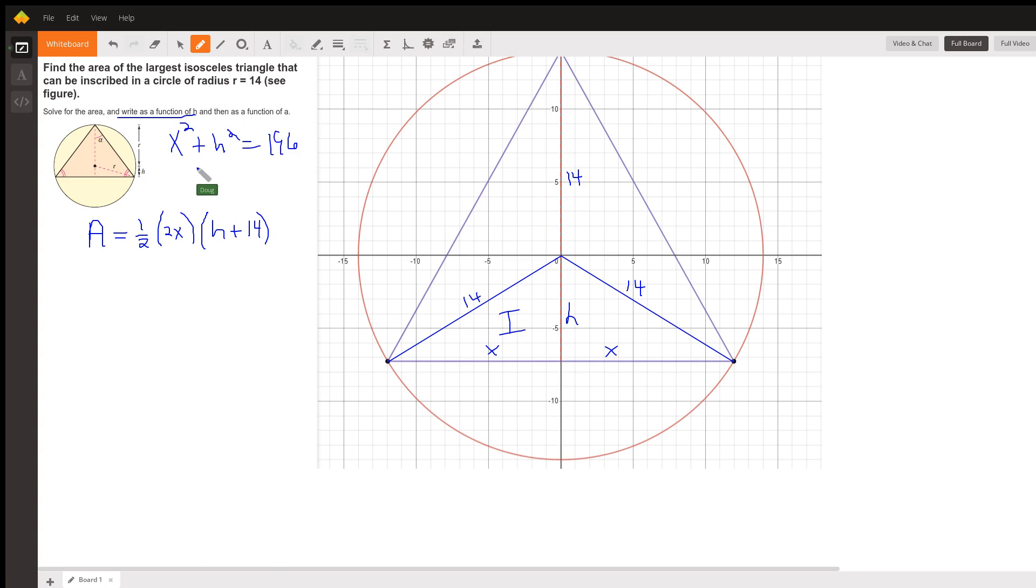And so, X squared is equal to 196 minus H squared. So, X is the square root of that, and since we are dealing with segment lengths, we'll take the positive square root.